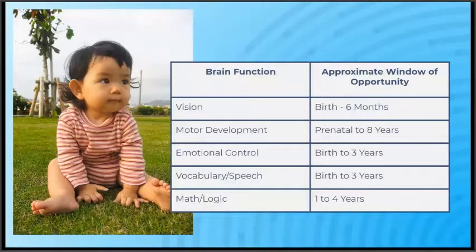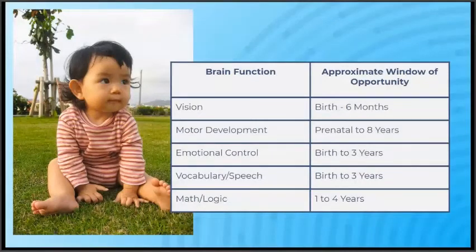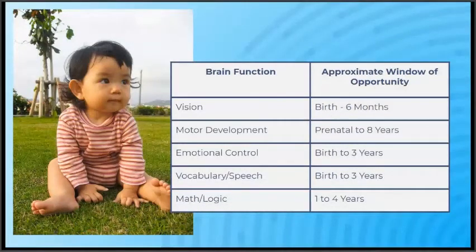There are windows of development for each child. Vision: birth to six is where the most growth can happen. Motor development — both gross and fine motor — is prenatal to eight years old, which is the largest window of development. Emotional control is birth to three. Vocabulary and speech is birth to three — that's why it's so crucial that babies zero to three are talked to and sung to. Math and logic is one to four, where they're problem solving, learning same and different, and learning to sort. It's crucial children have opportunities during those windows of development; without them, they may not reach their full potential.